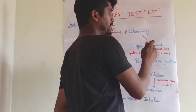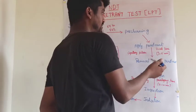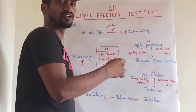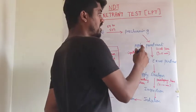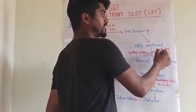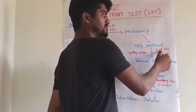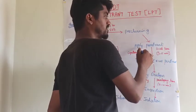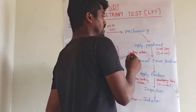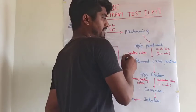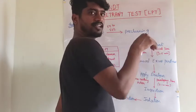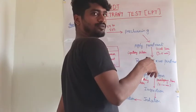The next step is to apply the penetrant on the surface of the metal to be checked. After applying the penetrant, we have to let it rest for 3 to 5 minutes — this time is called dwell time. Without any disturbance, we keep it for 3 to 5 minutes, during which capillary action takes place — the penetrant penetrates inside the metal through any holes or defects.